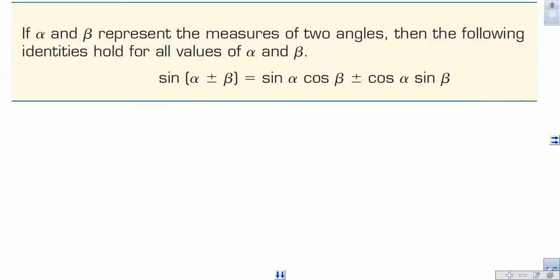Let's look at sine first. If we let α and β represent all the measures, the measurements of two angles, then this identity holds true for all alphas and all the betas here. So sine of α plus minus β, I'll get to that in a second, is equal to sine α times cosine β plus minus cosine α times sine β.